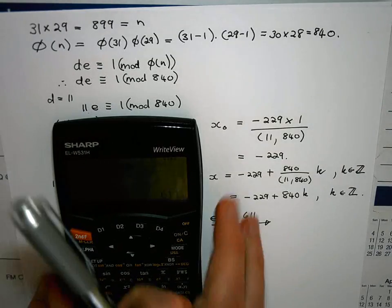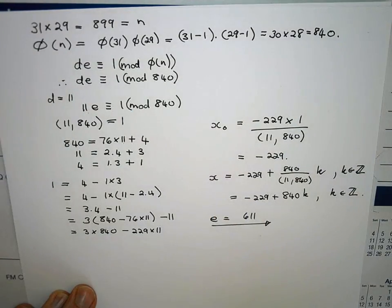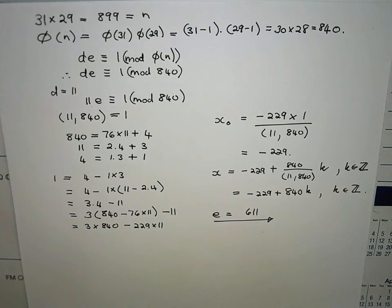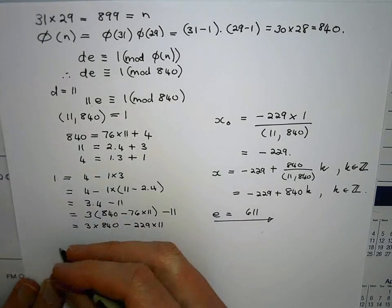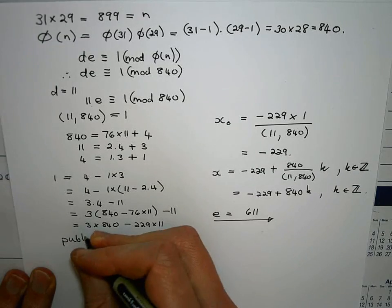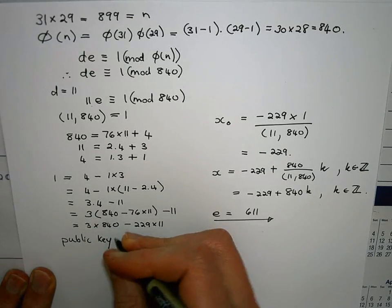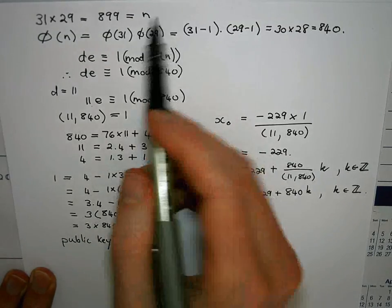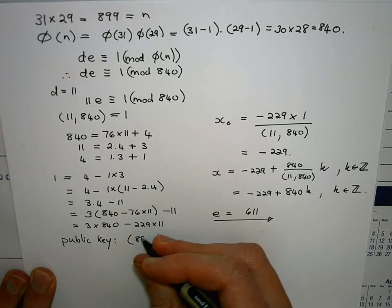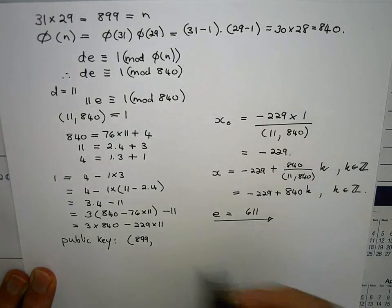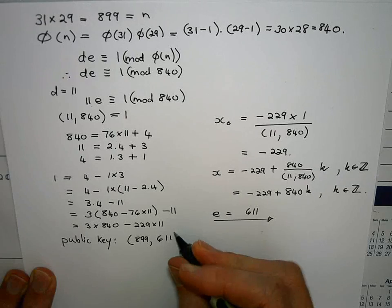Okay so there I'm now in a position to set up my cryptographic system. I can say that the public key consists of n which is 899 and e which we just calculated as 611.